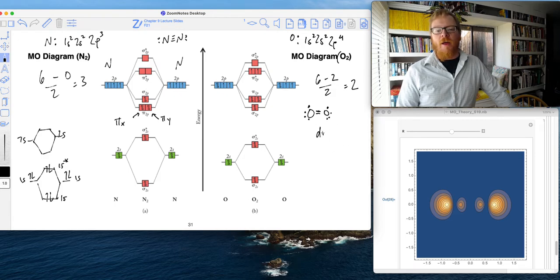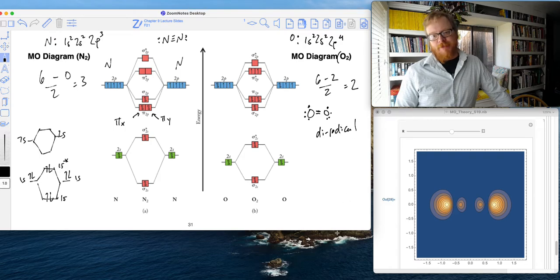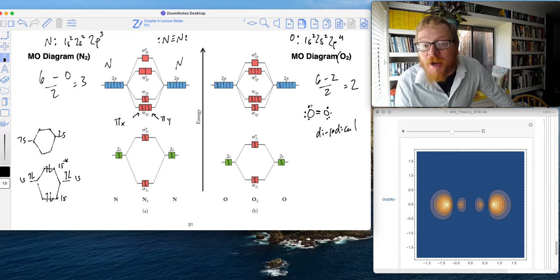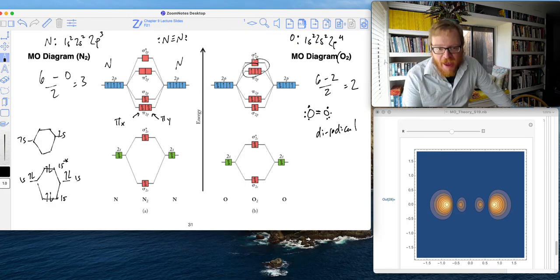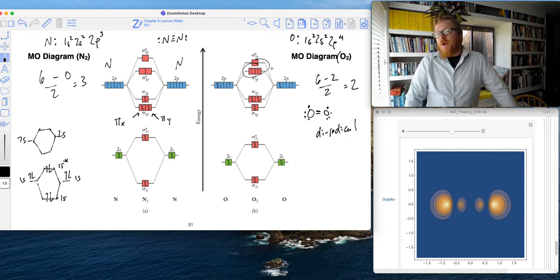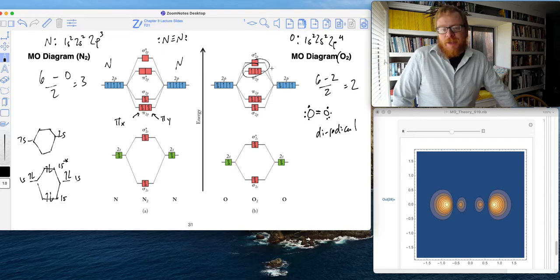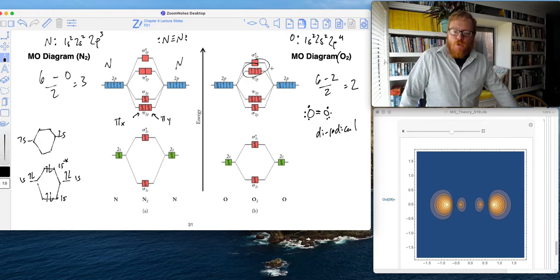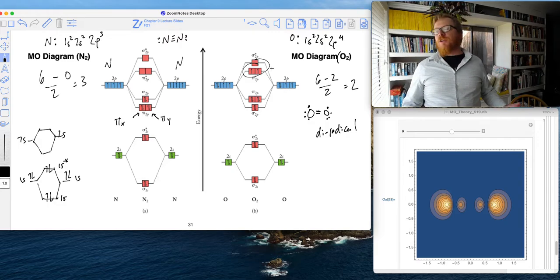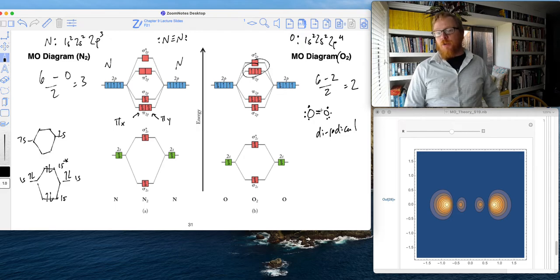It has two unpaired electrons, and there they are. So we never would have been able to predict that from just doing our Lewis structure. When we do our Lewis structure, we just kind of think of it as, oh, there's two lone pairs on each oxygen atom. But it's not true.